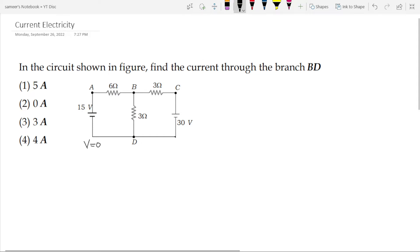The question says in the circuit shown in the figure find the current through the branch BD which is here. We are supposed to find the current through this 3 ohm resistor, and in these type of questions,